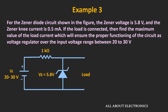Now let's move to the next example. We have a Zener regulator circuit with Zener voltage Vz = 5.8V and knee current Izk = 0.5 mA. When a load is connected, we need to find the maximum load current such that the circuit works properly as a voltage regulator for an input voltage range of 20V to 30V.